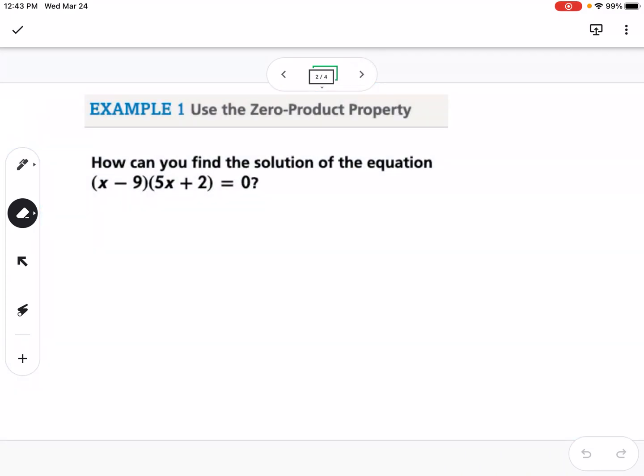The first example we're going to look at is the zero product property. The zero product property says that if you have two values, like A times B, and multiplying them together results in zero, that means that either A equals zero or B equals zero.